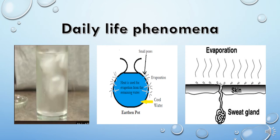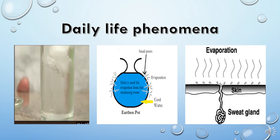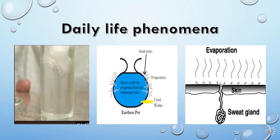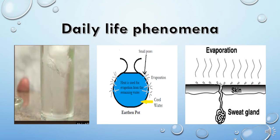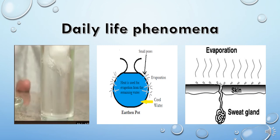Why do earthen pots keep water cool? Earthen pots (mitti ke pots) have small pores on their surface. Water oozes out through these pores and evaporates, taking heat from the water present inside the pot itself. The water molecules at the surface of the pot absorb heat from the water inside and evaporate through the pores, leaving the remaining water inside cooler. That is why earthen pots keep water cool, whereas metallic pots do not have such pores to allow evaporation.